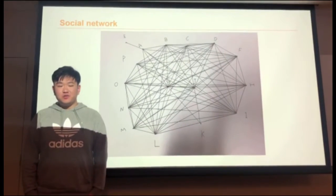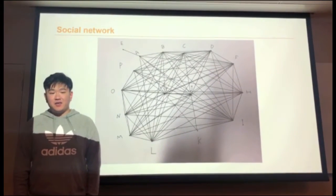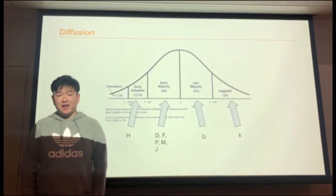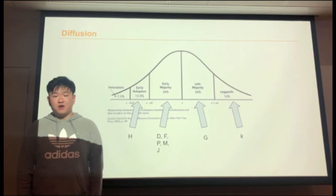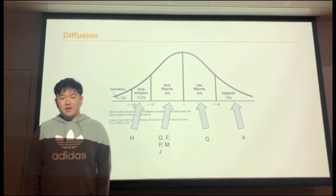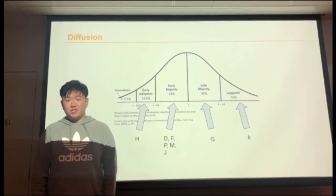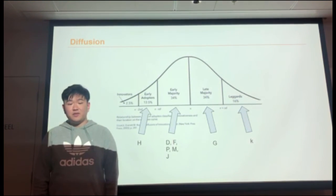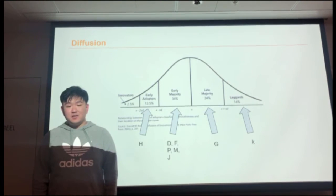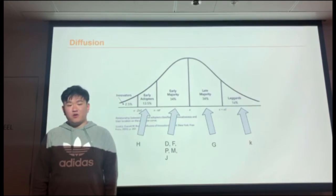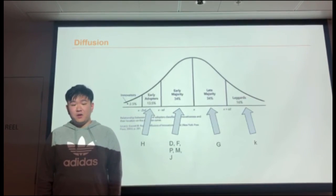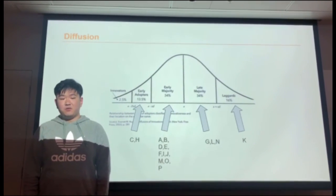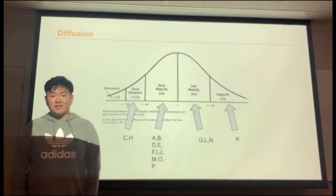First, we draw a social network to determine who are key stakeholders. They have the most relationships with others. However, according to Rogers' diffusion insights, we set G to later majority because his position is against. In this process, we find G has special growth relationships with D, H, F, P, and M. So we decided to address the early majority's concerns first. Then they will explain and advocate our approach to each other, which is the purpose of diffusion. Due to limited information, we only emphasize the potential relationships between groups. This is the classification of stakeholders.